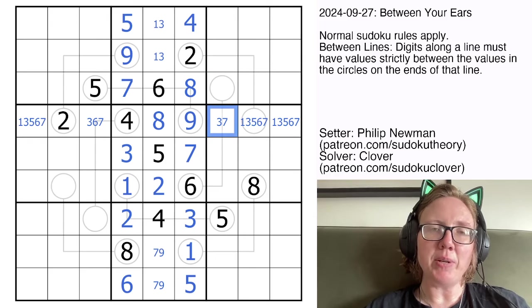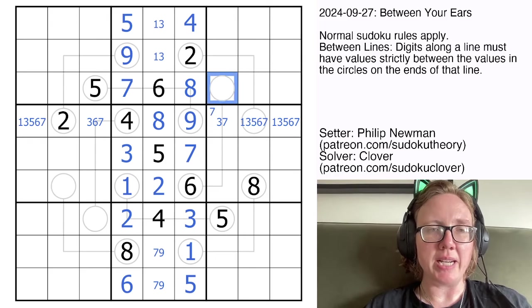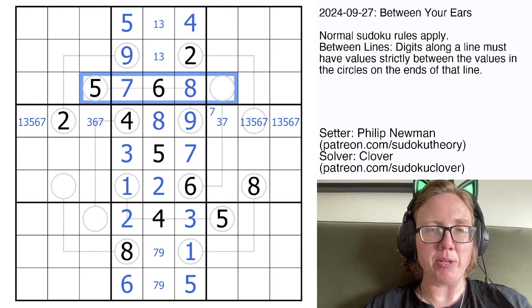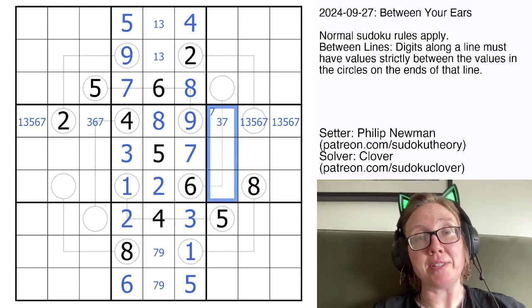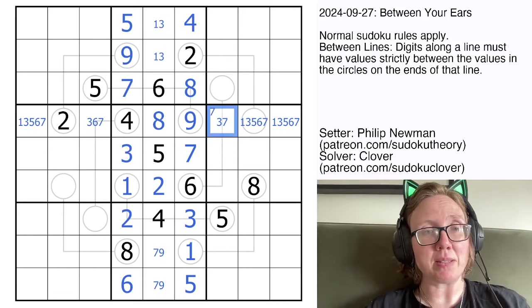If this was a 7, then this digit would have to be higher, which would make it a 9 given what we've already eliminated in this row, which would mean that these digits would all have to be between 6 and 9, but there aren't three different digits in between 6 and 9, so this has to be a 3.